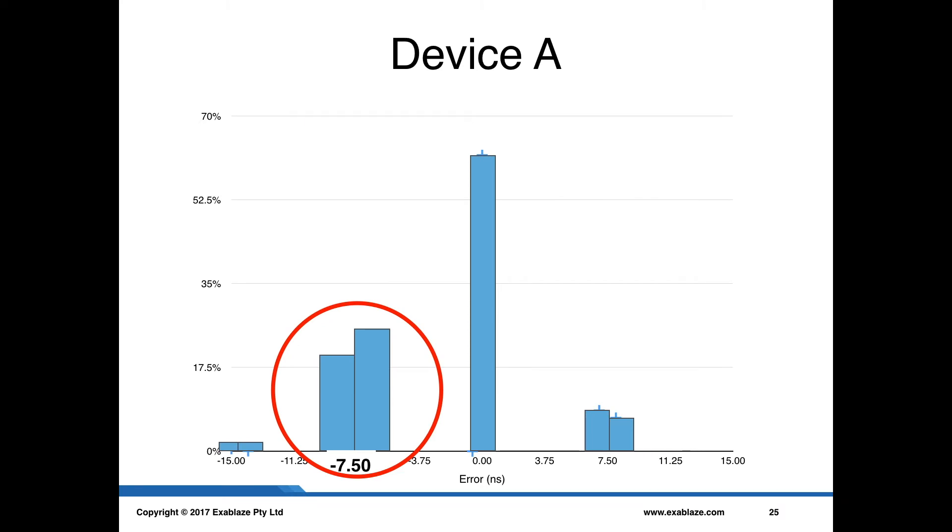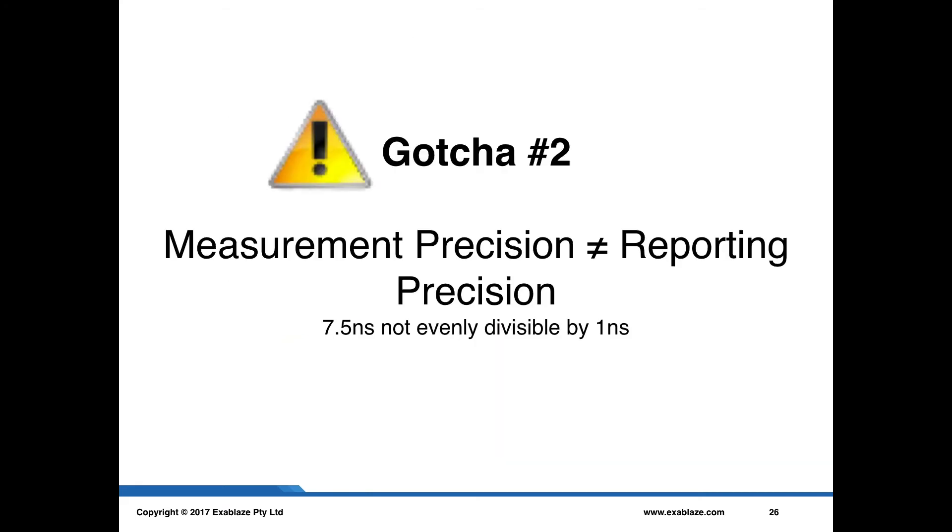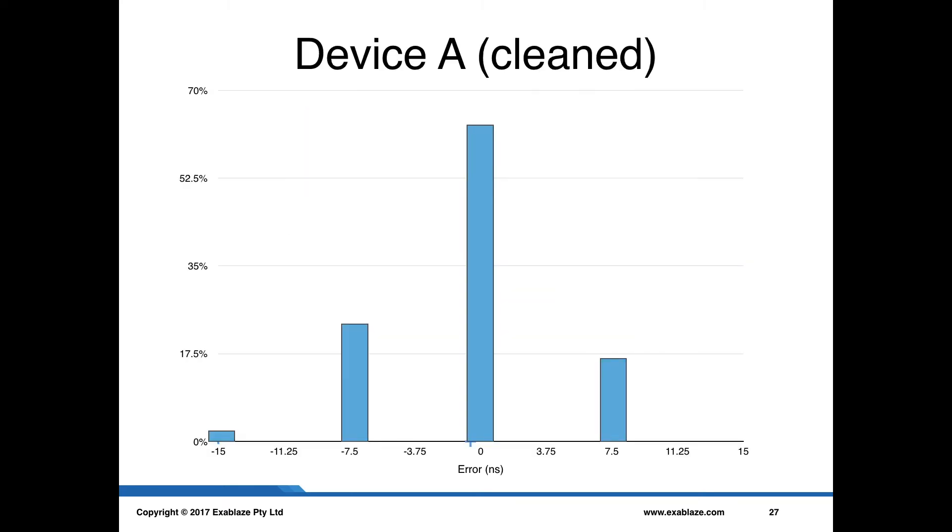The other interesting thing to observe here is that you can see we have this sort of quantization going on. What I've done is enlarge those buckets so you can see them next to each other there. They're kind of hovering around 7.5 nanoseconds, but in actual fact there's one at minus 8 nanoseconds and one at minus 7 nanoseconds. And this is kind of a second gotcha for doing this kind of high-precision measurement, which is that the measurement precision is not always equal to the reporting precision. In this case, the device reports values in one nanosecond increments, but it actually takes samples in 7.5 nanosecond increments, and obviously 7.5 is not evenly divisible by one. So, we can clean this up and round to the nearest resolution increment of the device, and this is the sort of curve that we get coming out.